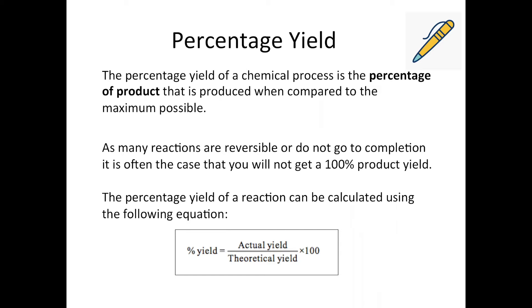So percentage yield is important to take into consideration when you're making up a chemical process because if the percentage yield is really low, it's going to be quite a costly reaction for you to run, because the only thing you're going to make a profit off of is your product that you're trying to sell, so if you're making a very low amount of it, you're going to have to buy in a lot of reactants, and then you don't have much of your product to sell.